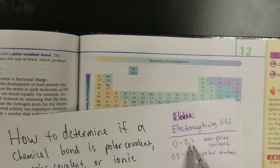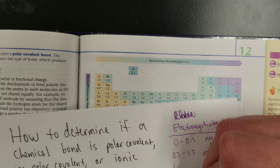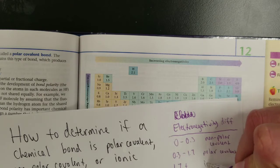Sorry, I accidentally said atom, I meant electron. So, these are attracting the electron roughly equally. Here, one atom's attracting the electron much more than the other. And if it's 1.7+, that's ionic bond.